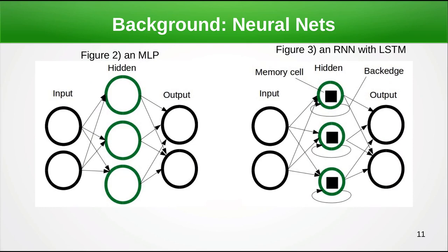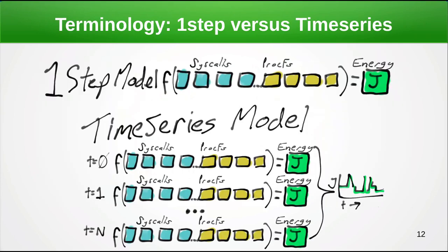Some of the models we'll use will be neural network models. These consist of neurons connected by edges, and they're usually fully connected. The kinds of neural nets we use will be layered — one layer connects to the next layer. If they don't have memory and don't have back edges, they're typically considered a multi-layer perceptron. Another kind has back edges, so it has recursion — those are called RNNs, recursive neural nets. When we add a memory cell, we get an LSTM, a long short-term memory neural network, which has typically done quite well with modeling time series data.